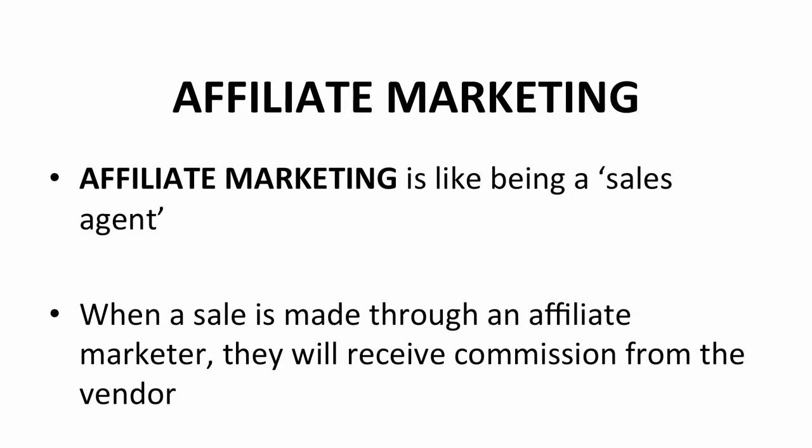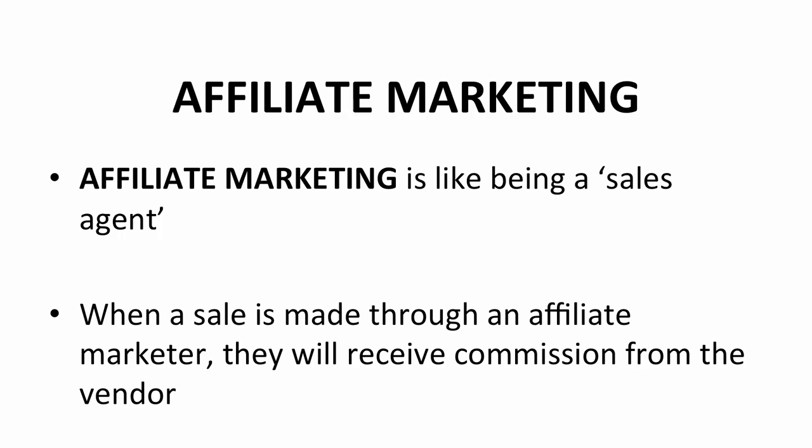Before we go any further, we should have a clear picture of what we've committed ourselves to. To master something, we need to know the ins and outs of it. So what is affiliate marketing? There is no simpler way to describe affiliate marketing but to compare it to being a sales agent. An affiliate is essentially an online sales agent that conducts sales to earn commission. They sell products from a vendor. When a sale is made through an affiliate, the affiliate will receive commission from the vendor. For example, when a buyer makes a purchase from your affiliate links that you provide, the payment will be made to the vendor, and the vendor in turn will pay your commission. This is the basic of what you need to know.